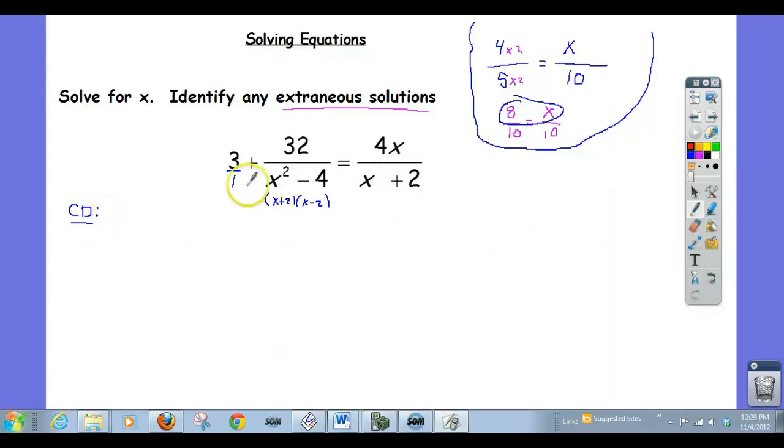So my common denominator needs a 1, but I don't need to put that. It needs an x plus 2 and an x minus 2. And it needs an x plus 2. But I don't need to put an x plus 2 again because it's already here.